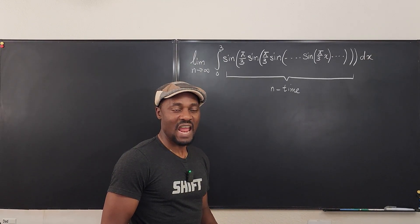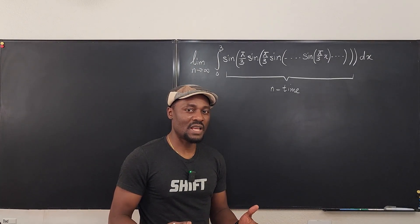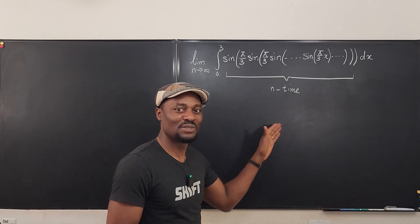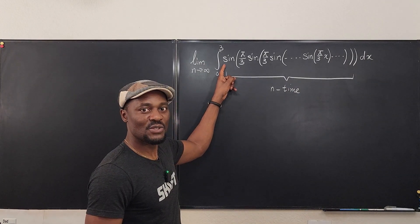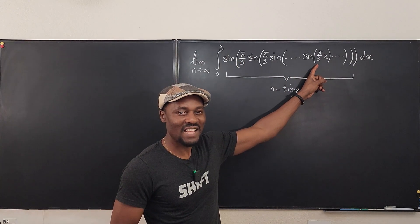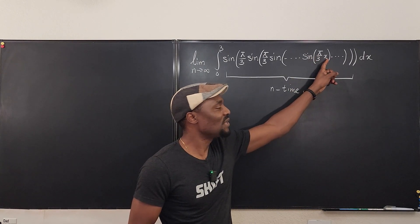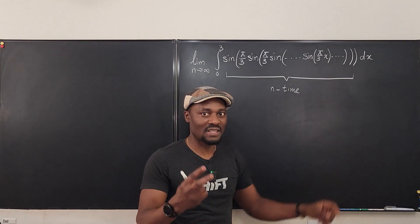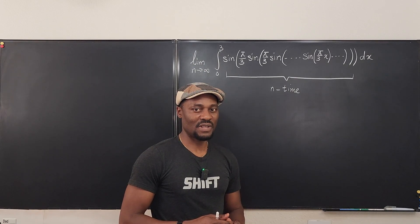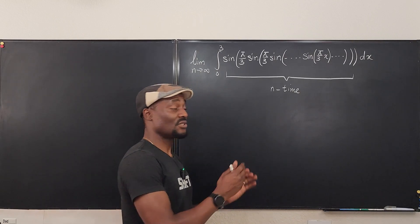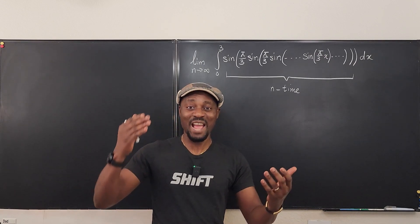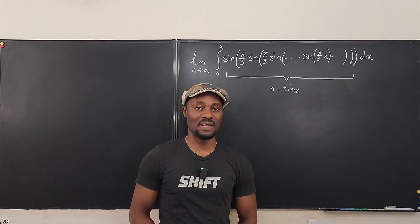That's your first thing — if it does not converge, just say it diverges. The second question is: what is being repeated? Is it pi over 3 sine, or sine of pi over 3 times something? Obviously the very first thing you see is sine, so sine of pi over 3 times something is what is being repeated. The third question is: do I know how to solve it? If yes, go ahead. If no, watch this video to the end.